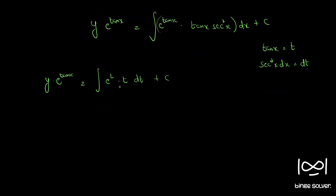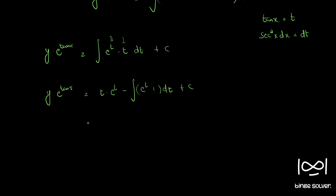We can integrate this by parts, taking t as the first function and e^t as the second function. We have y · e^(tan x) = t · e^t minus the integral of e^t · 1 dt plus C, which gives t · e^t minus e^t plus C. Substituting back, y · e^(tan x) = tan x · e^(tan x) minus e^(tan x) plus C.